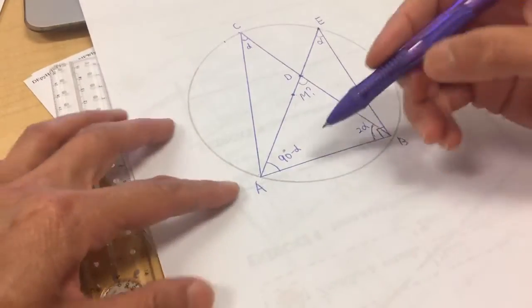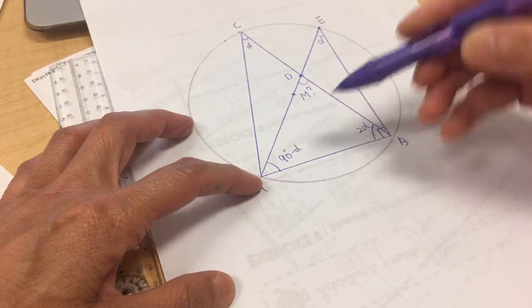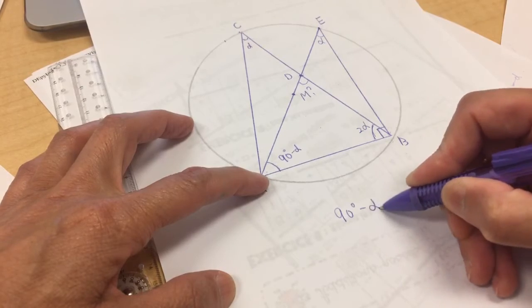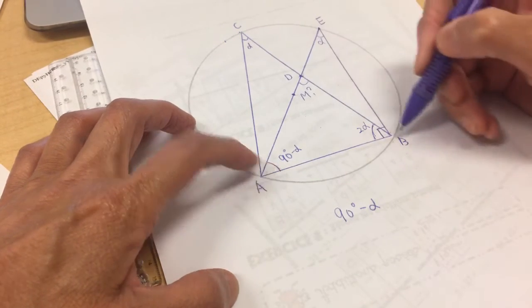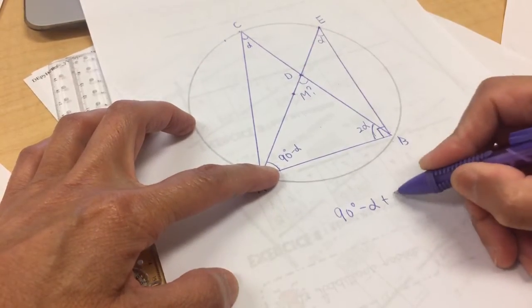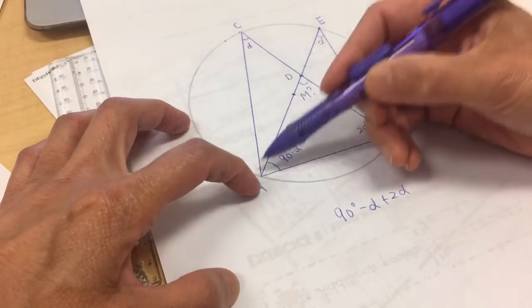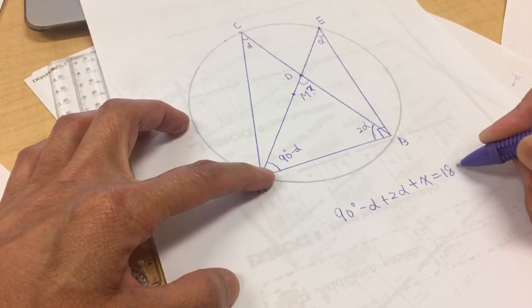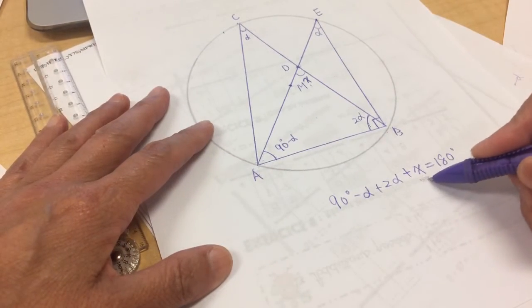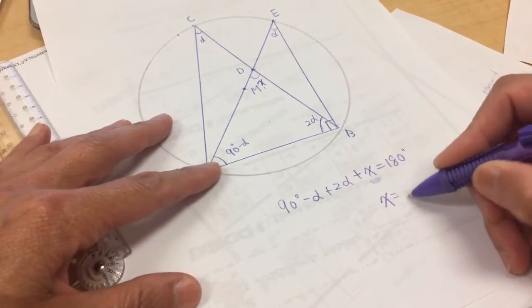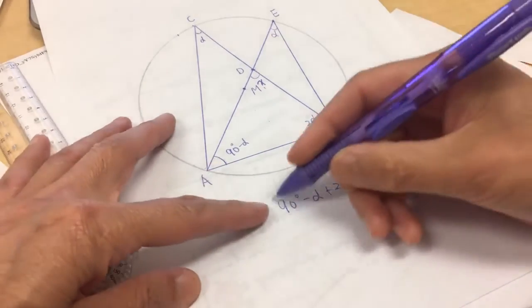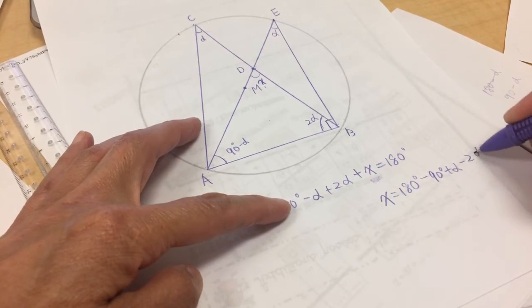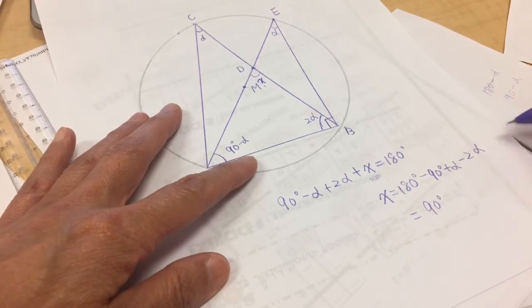But we know in ADB, in this triangle, this degree DAB 90 degrees minus alpha, plus DBA, plus 2 alpha, plus this unknown angle ADB, I will write it as X, plus X. Three of them equal to 180 degrees. So we need to know what is X. X equals 180 degrees minus 90 degrees plus alpha minus 2 alpha, equals 90 degrees minus alpha.